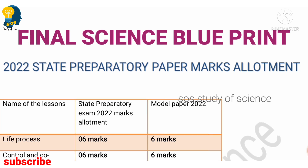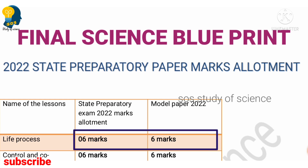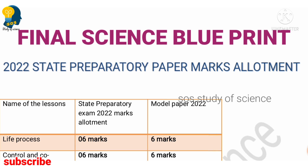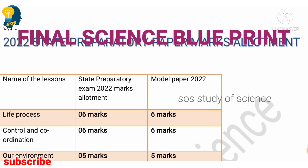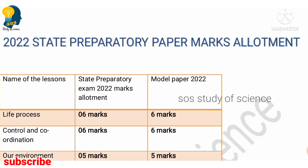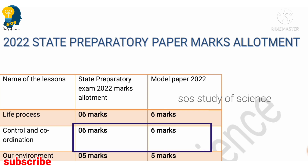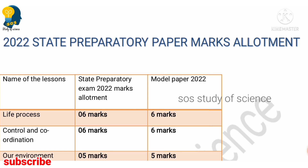When we look at the model question paper, for the lesson Life Processes, six marks had been allotted. Even in the state preparatory examination question paper, six marks is allotted for Life Processes. So in the board examination also, by reading the Life Processes lesson you will get six marks. Moving to the next lesson — Control and Coordination — in the model question paper as well as in the state preparatory examination question paper, six marks has been allotted. So definitely in the board examination also you will get six marks for this lesson.